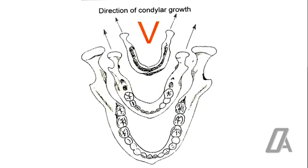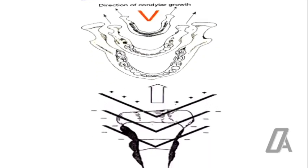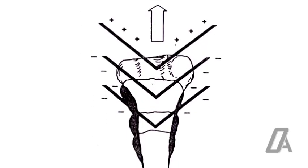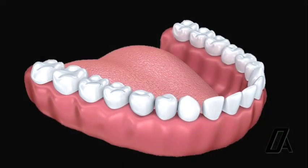The individual condyle remodels according to the expanding V principle. Condylar cartilage can be visualized as being positioned on the inner aspect of the expanding V. Neck of the condyle is lengthened by the reduction of the bone situated on the side of the V,